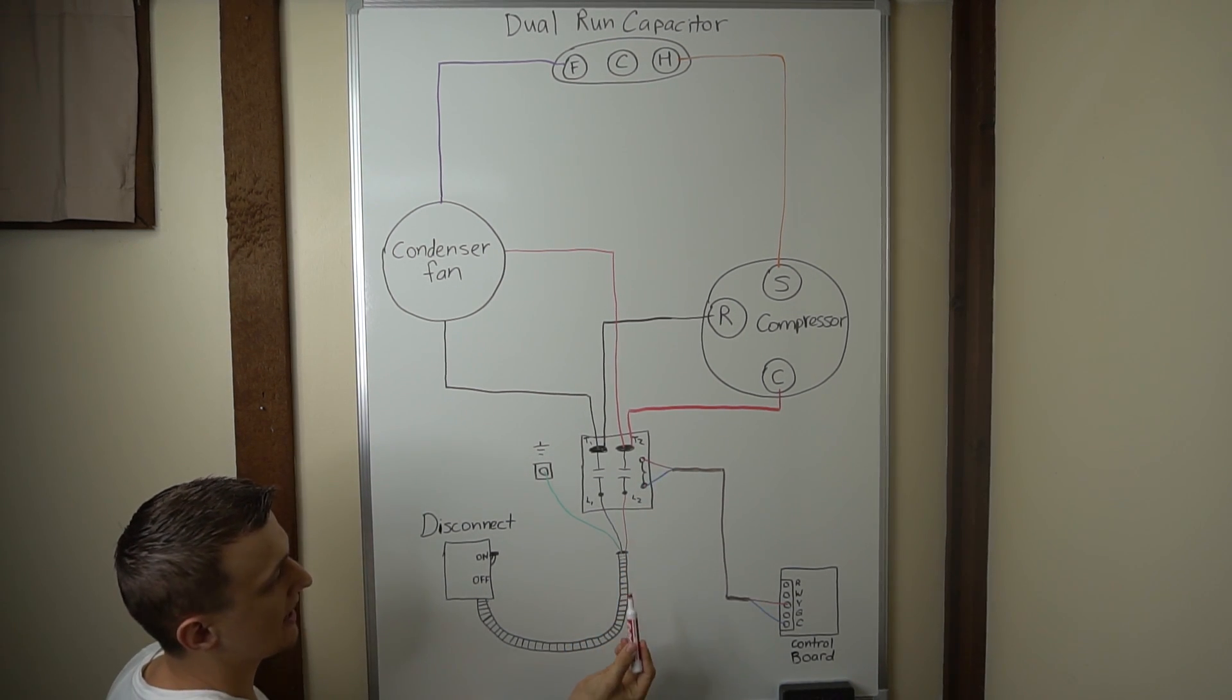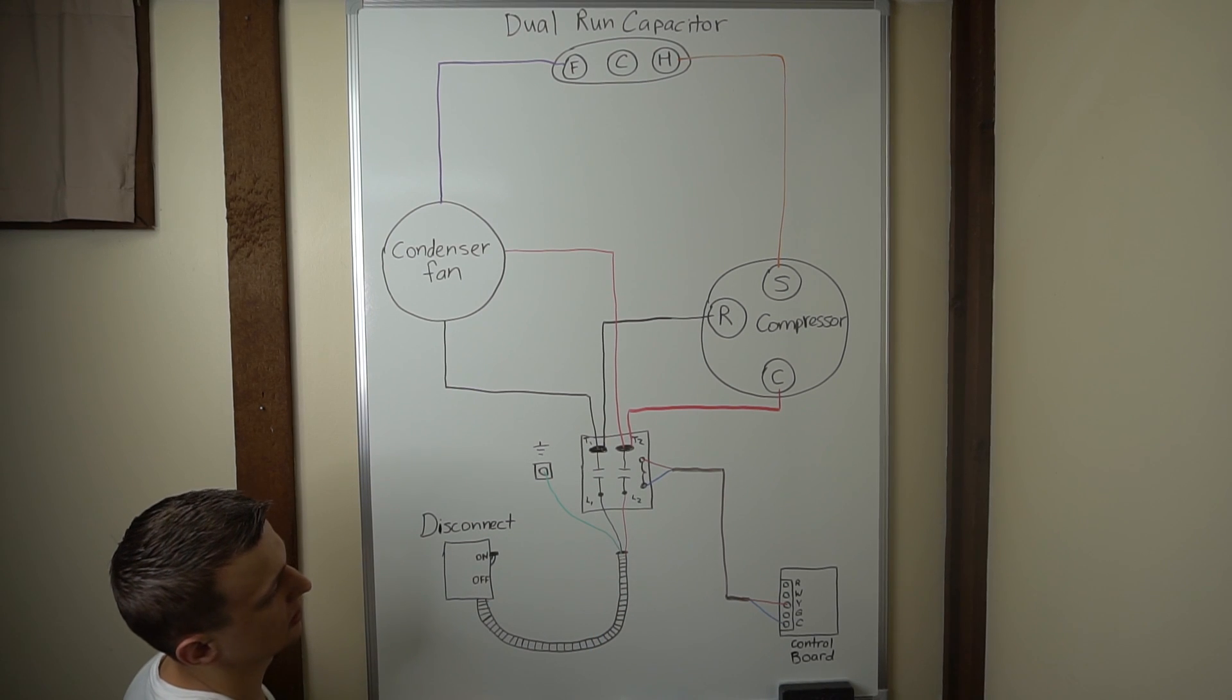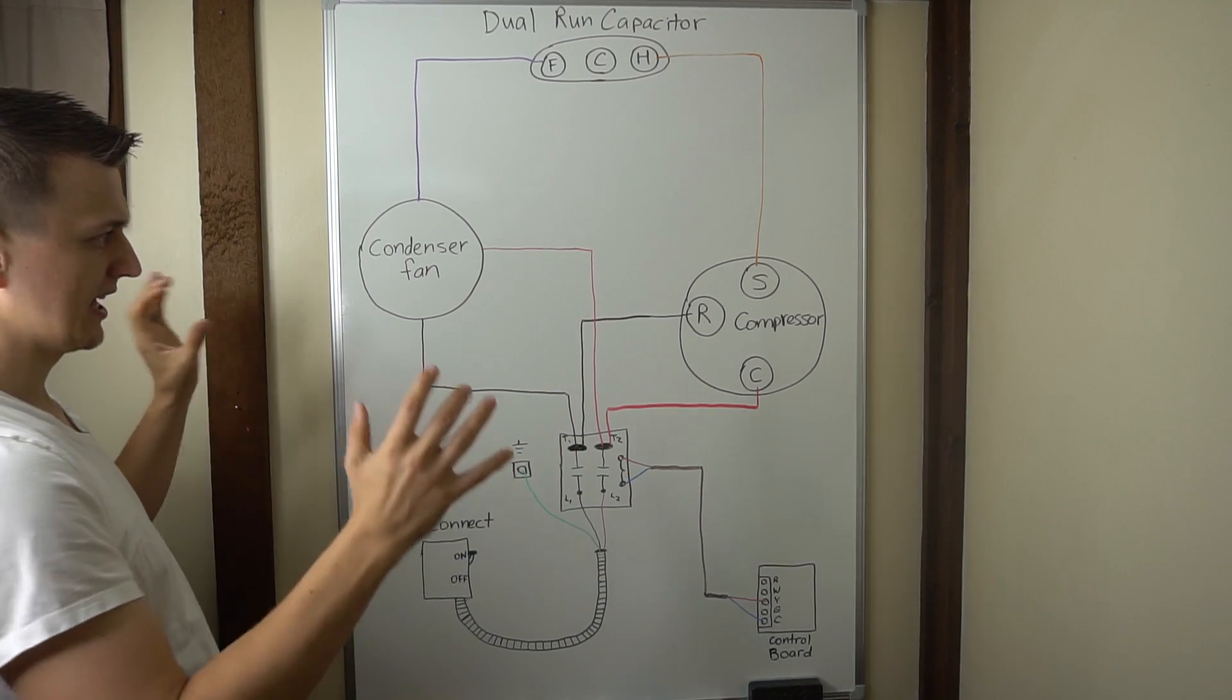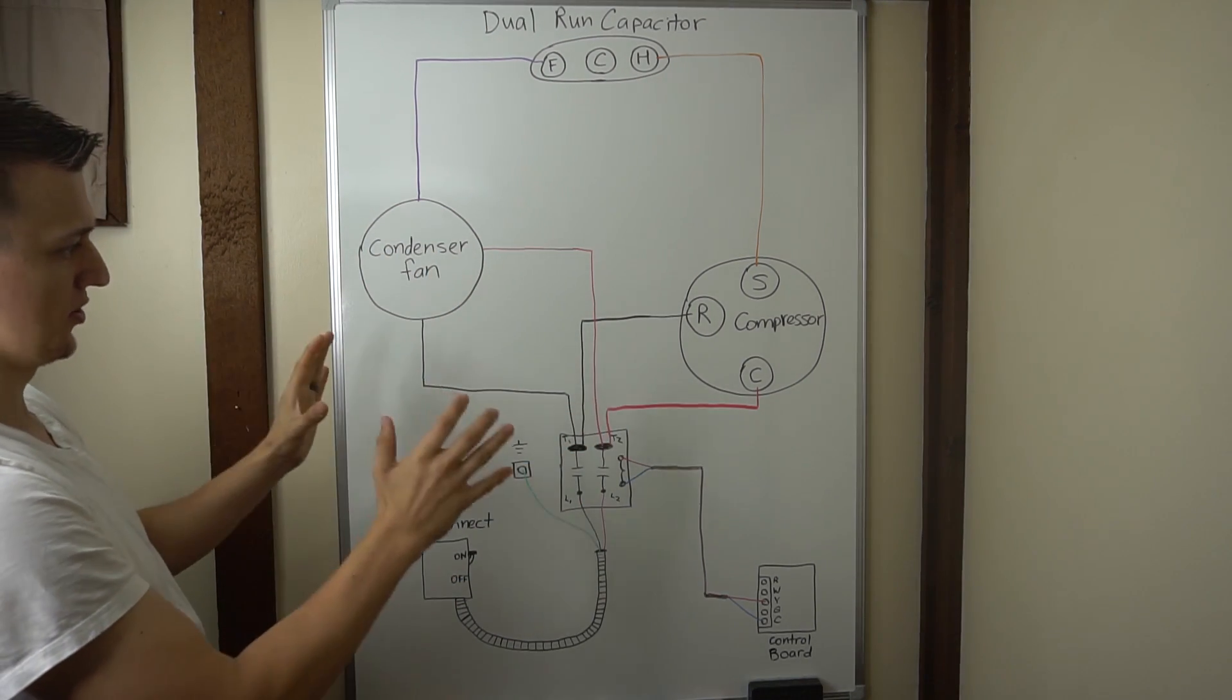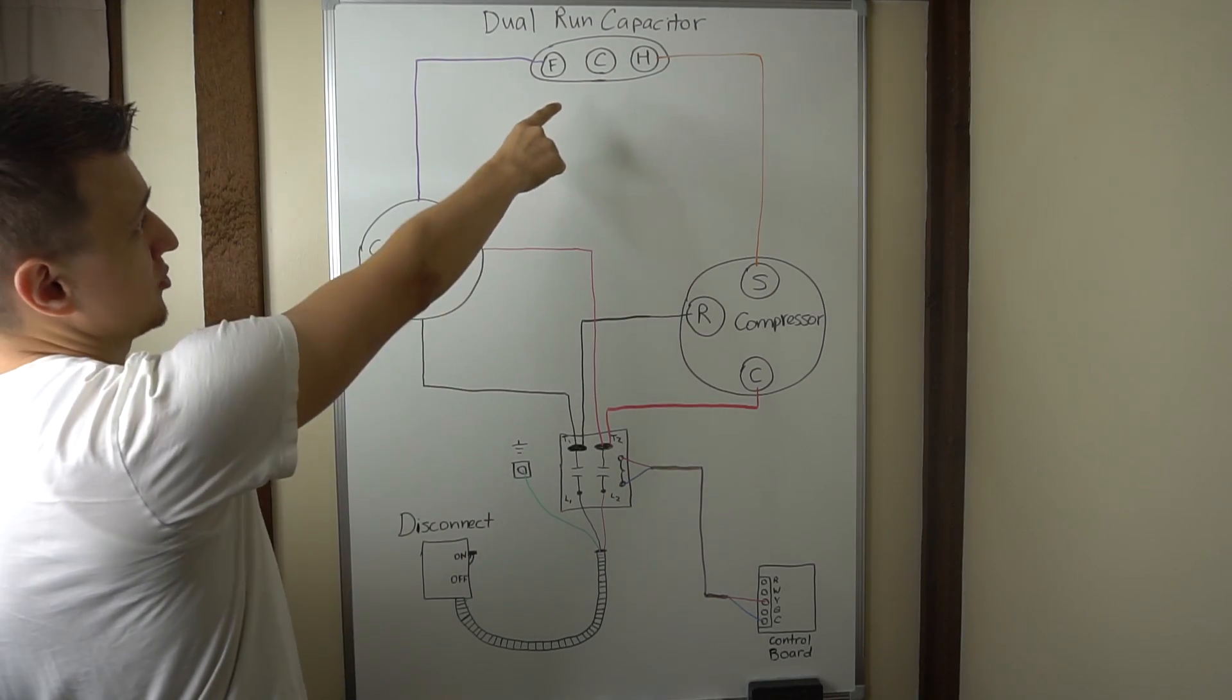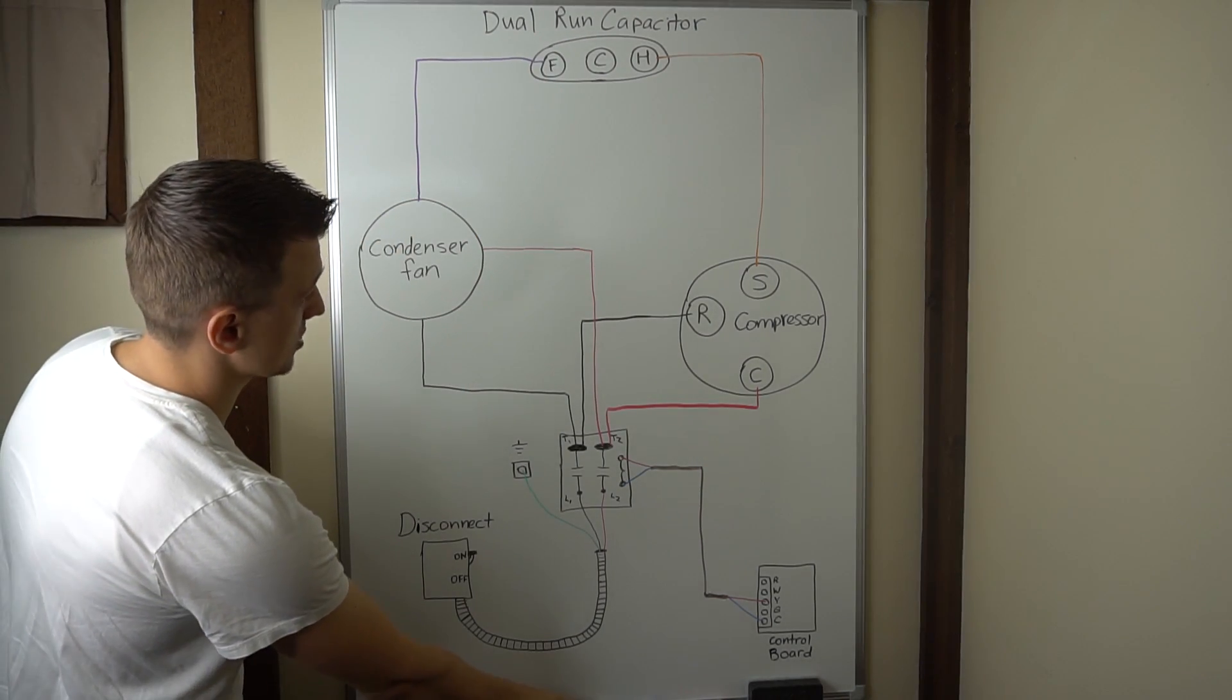And it does not matter which wire goes to which side of the contactor coil. So we have everything wired up. And if we turn on our unit with the wires being the way they are, nothing will work. And I don't know how many of you caught this, but I totally forgot to hook up the common on my dual run capacitor. And that of course is important.